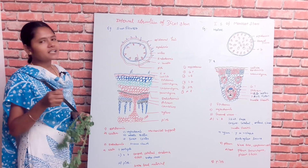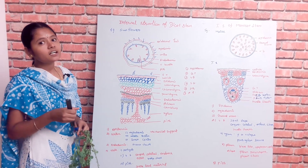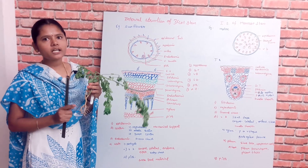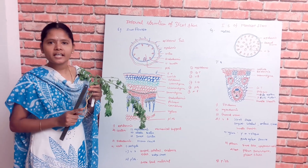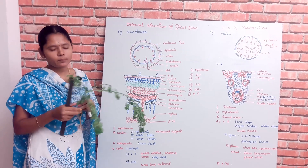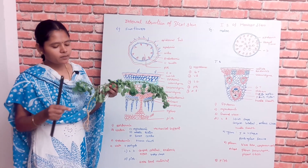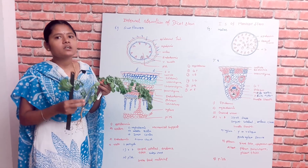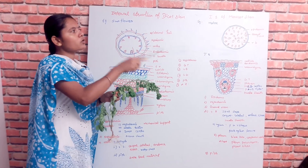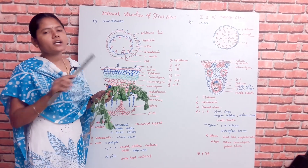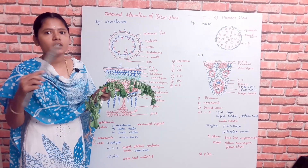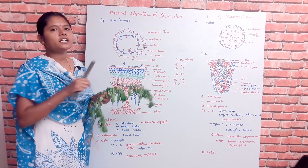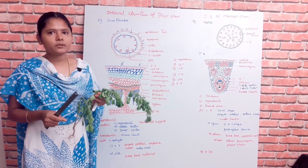In the last class, we talked about roots and the difference between the tap root and the fibrous root. Now let's talk about the stem — specifically the dicot stem and the monocot stem. This is a brief discussion, and let's talk about the differences between the two.